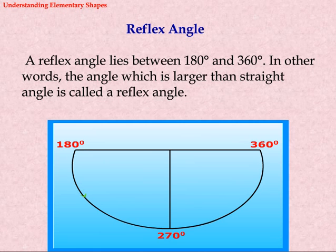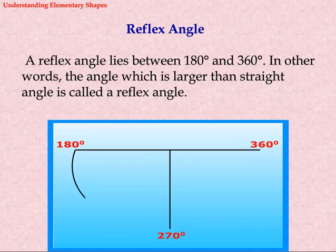Reflex angle: A reflex angle lies between 180 degrees and 360 degrees. In other words, the angle which is larger than a straight angle is called a reflex angle.